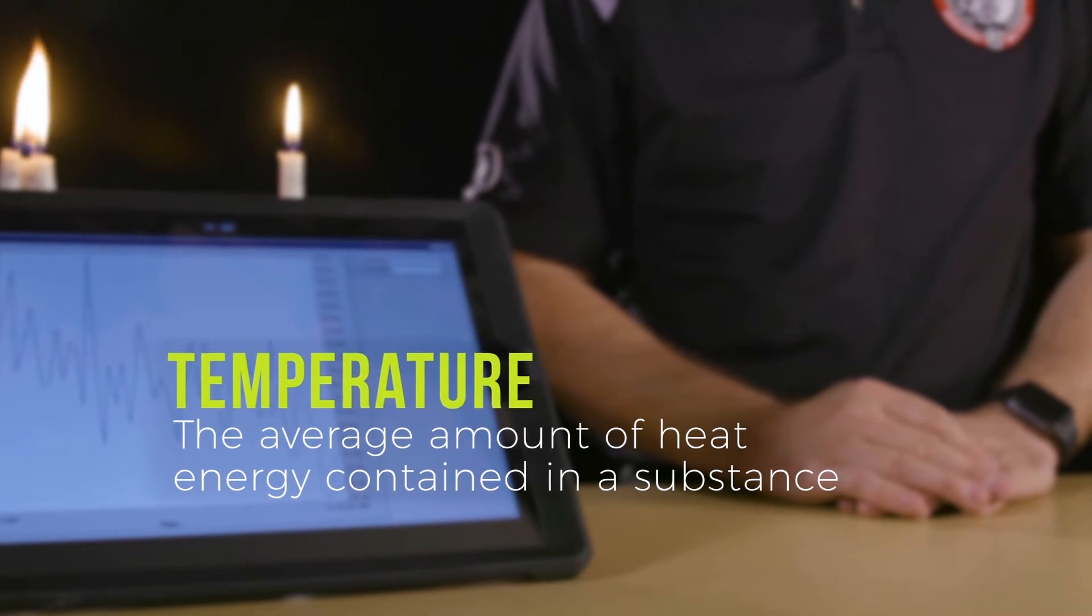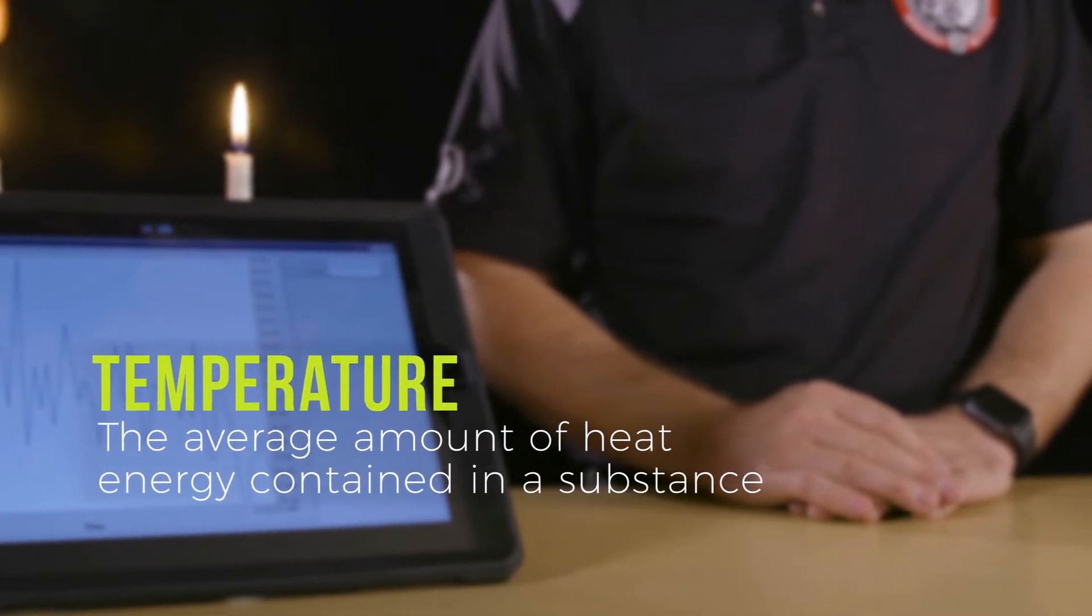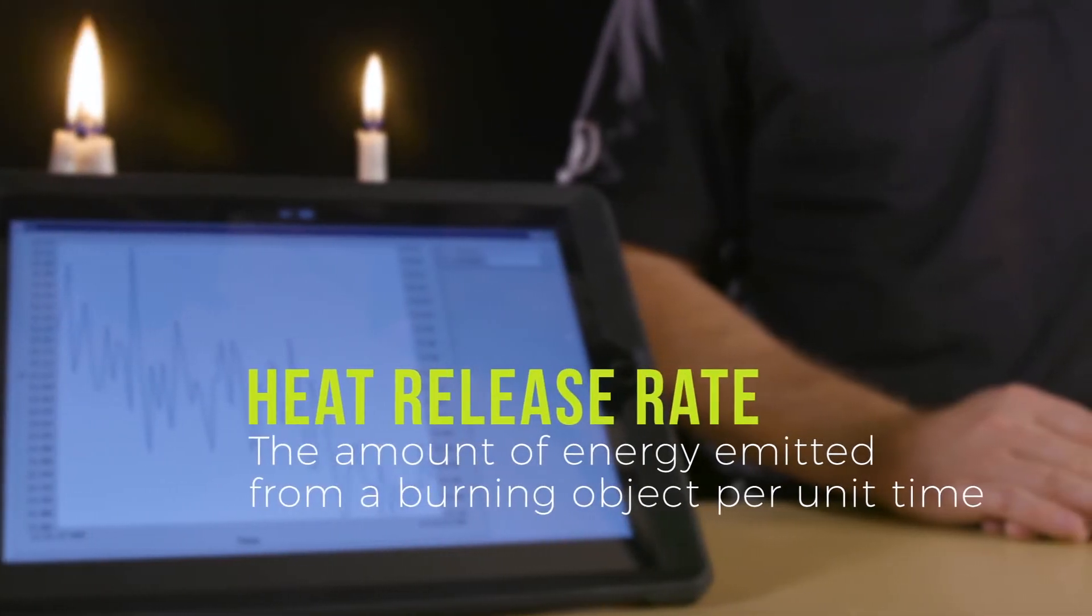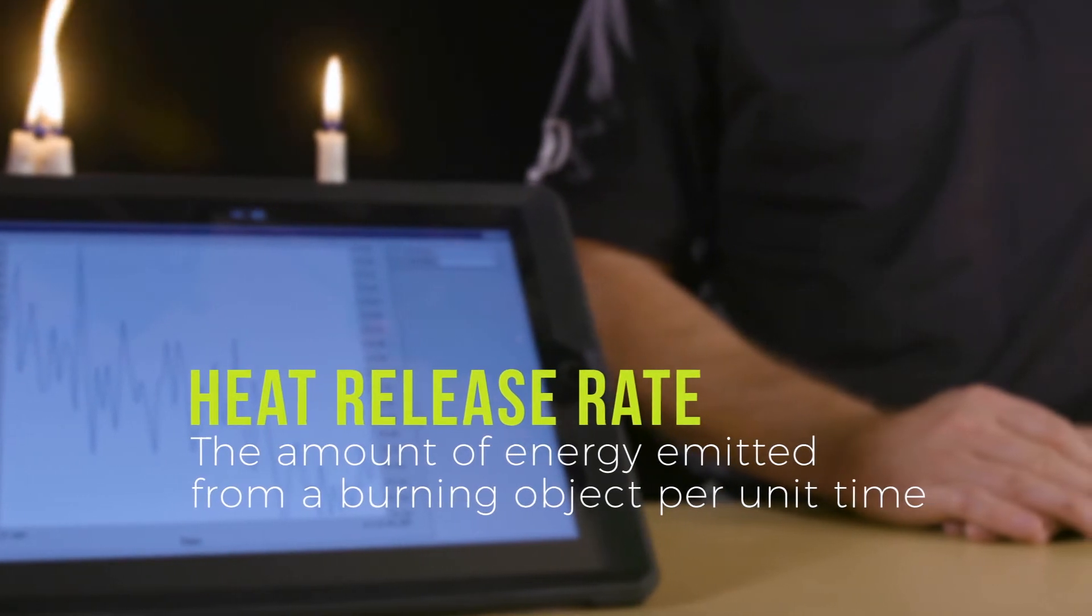Temperature is the average amount of energy contained in a substance. For example, ambient air is at about 70 degrees Fahrenheit. Heat release rate is the amount of energy that comes off a burning object.